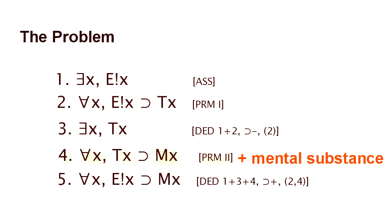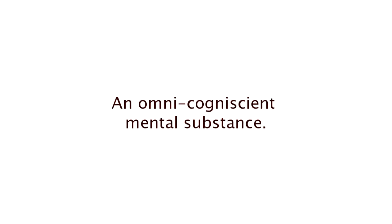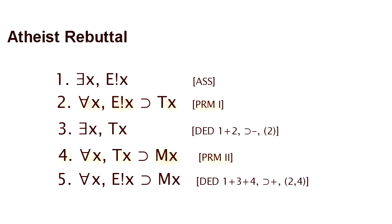The premises for idealism thus require an omni-cogniscient mental substance. The problem is that an omni-cogniscient mental substance is precisely the kind of thing about which atheists are typically rather skeptical. Thus, the atheist may well deny the very premises upon which idealism rests.